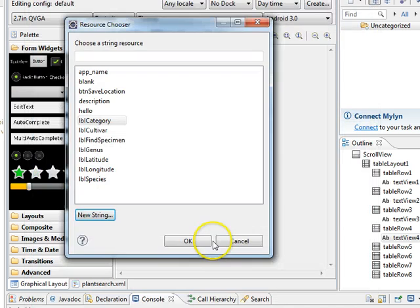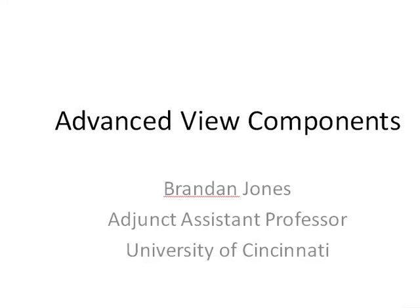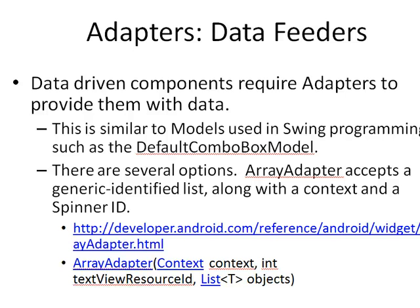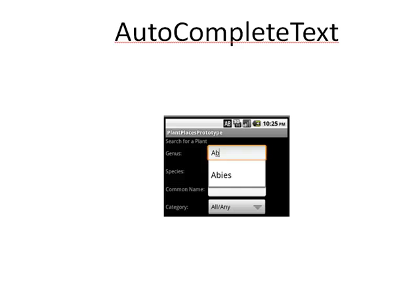Now we need to explore some of the advanced view components. These are things that are typically data-driven — data selectors that help us reduce typing by giving the user a predefined list. That predefined list is going to come through via an adapter. In this case we'll use an array adapter — a collection of data we're feeding to this advanced view component. For autocomplete text, as the user types it tries to complete based on a list of known items.